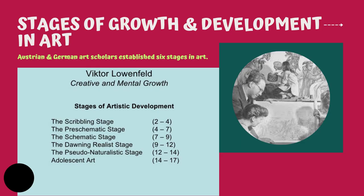First, here I'm going to talk about the stages of growth and development in art. Austrian and German art scholars established six stages in art. Here is Viktor Lowenfeld's creative and mental growth stages of artistic development. Number one is the scribbling stage, that is two to four years.